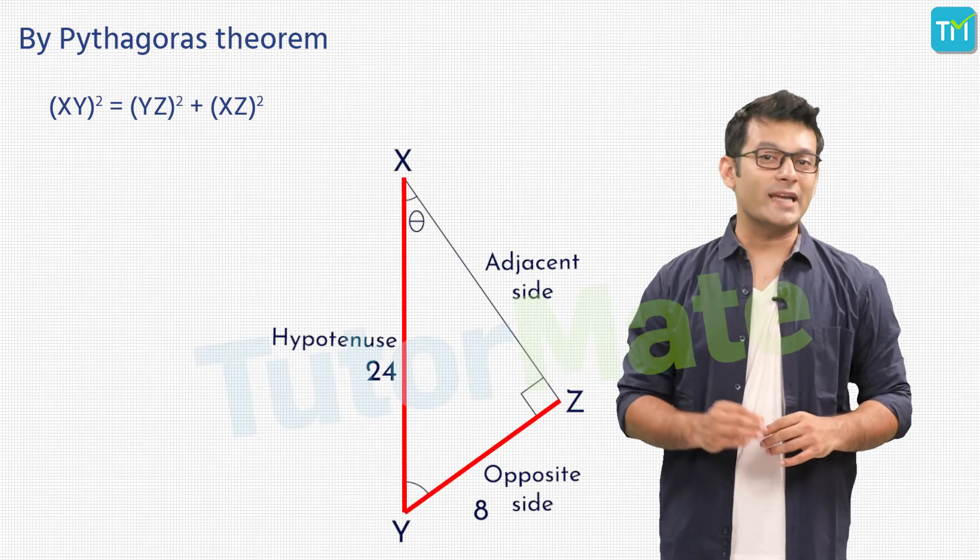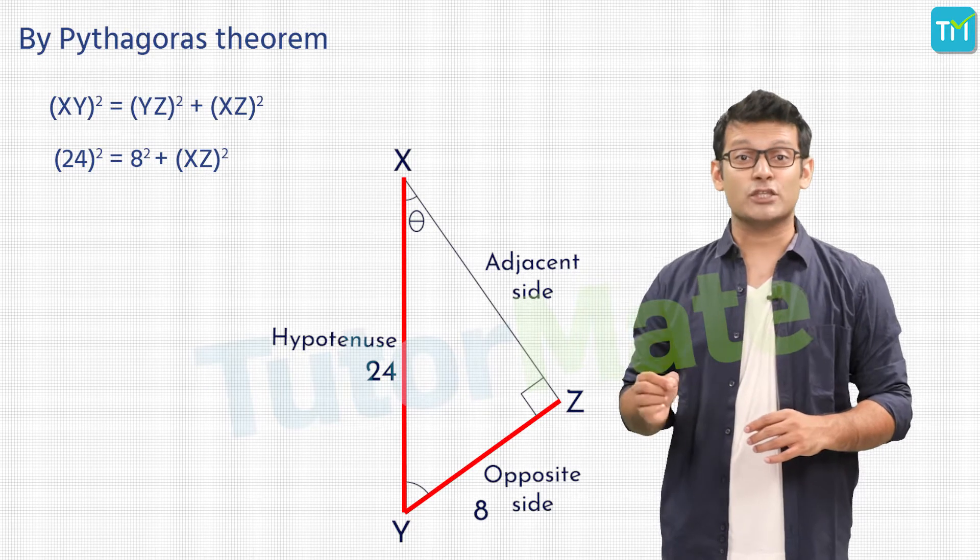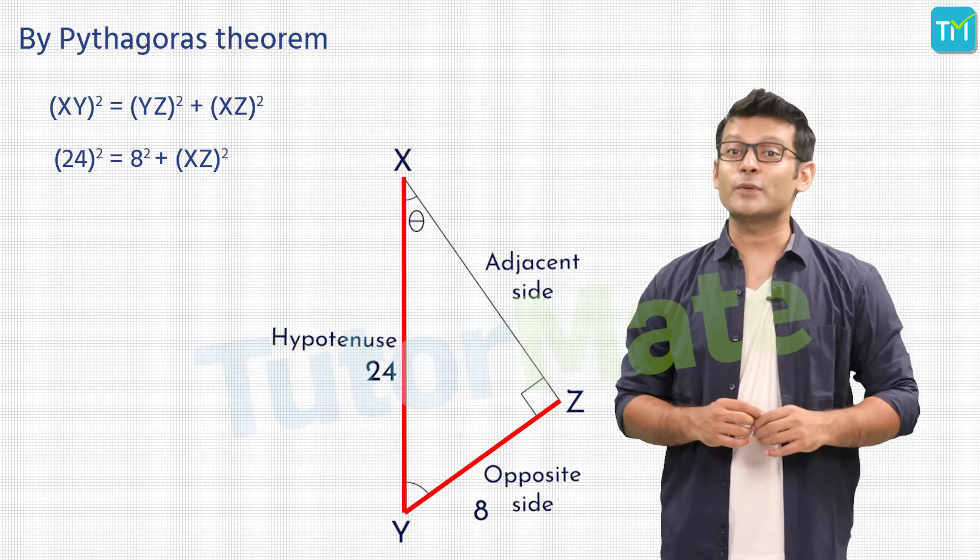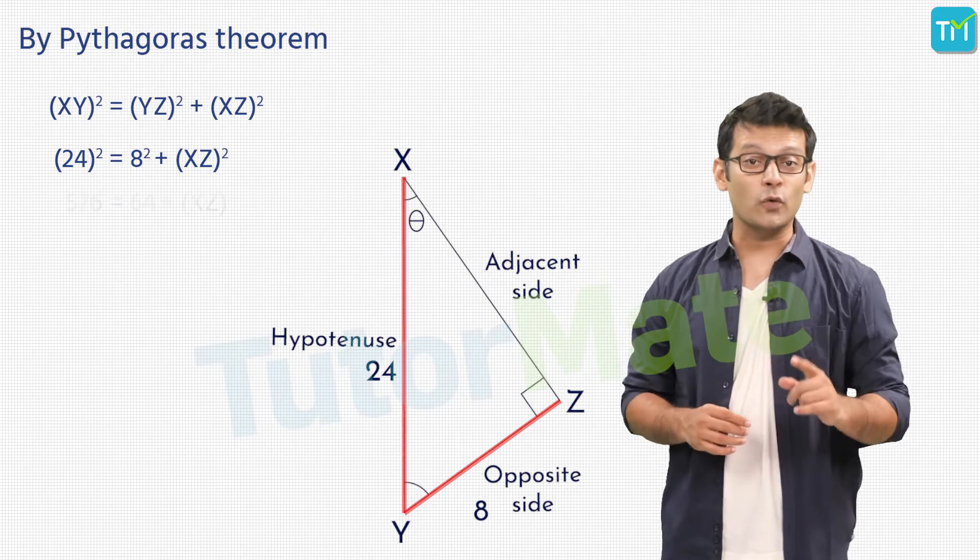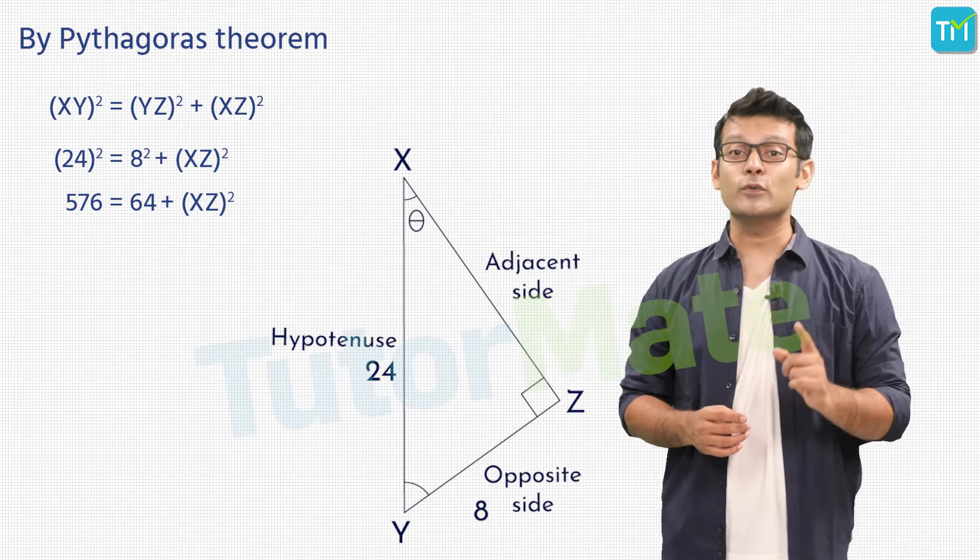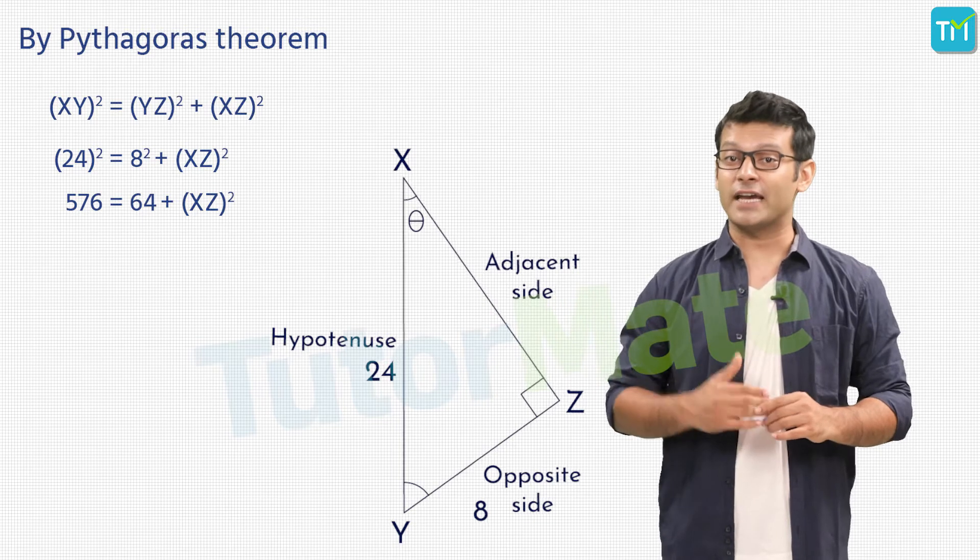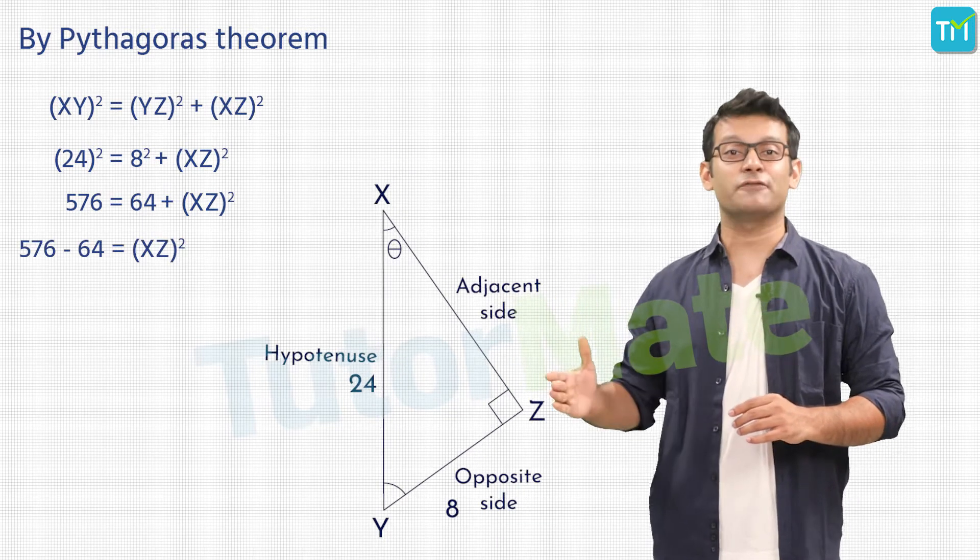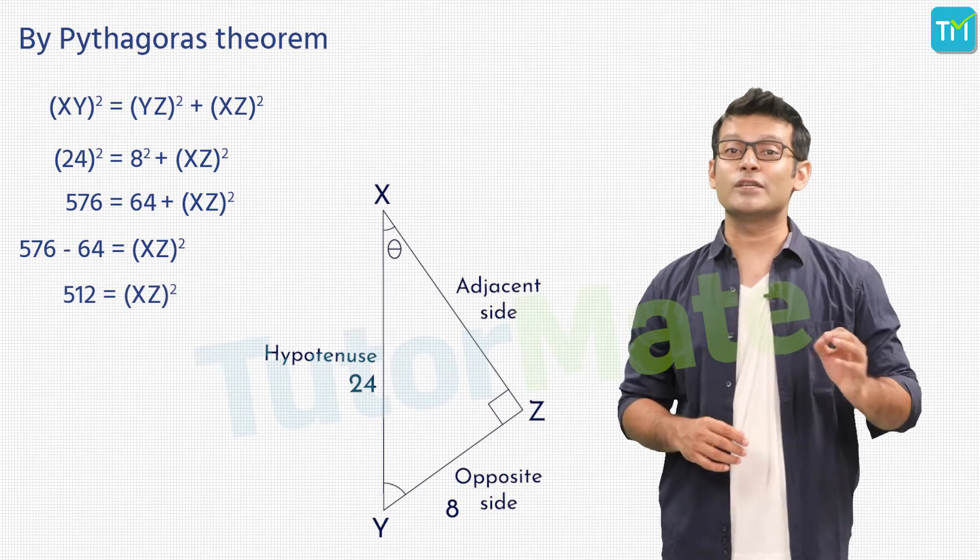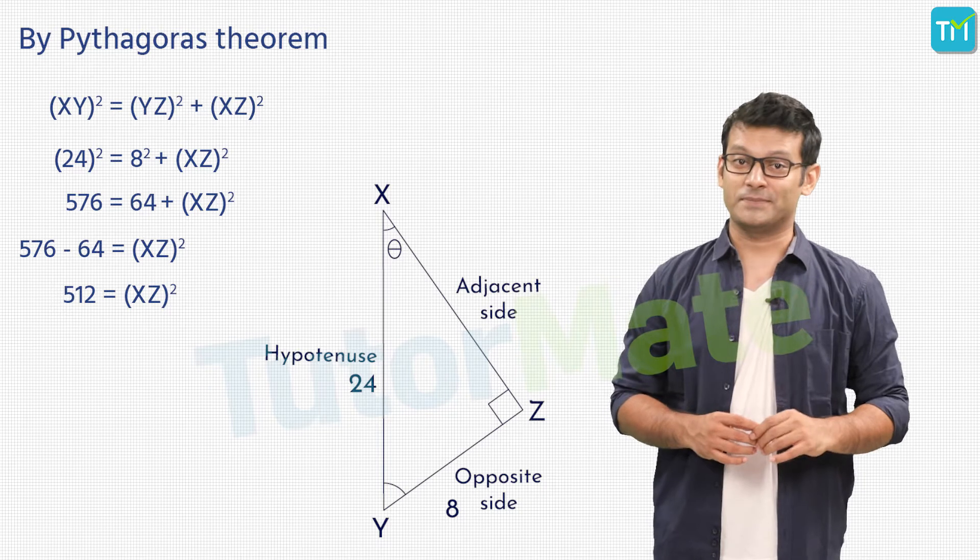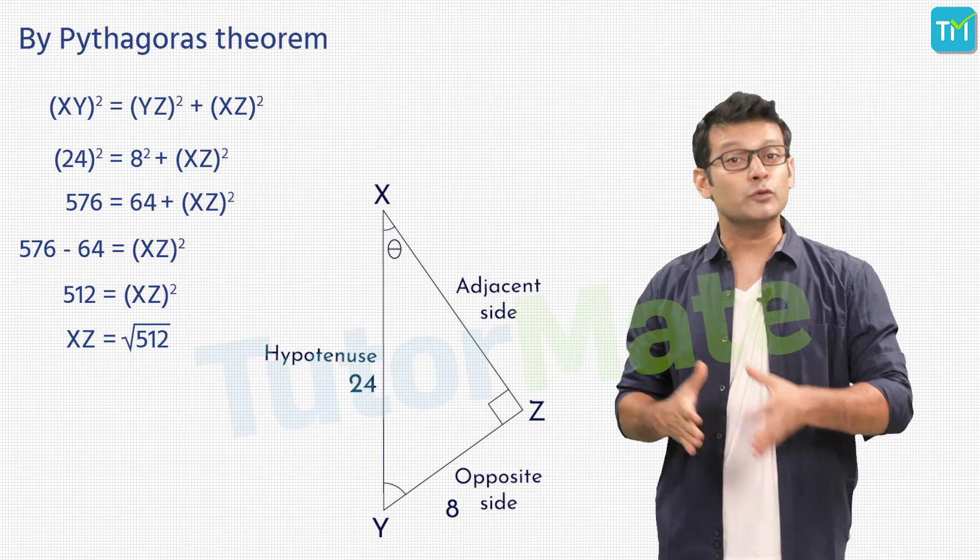Substituting the values of XY and YZ, we will get 24² = 8² + XZ². We know that 24² is 576 and 8² is 64. So, 576 = 64 + XZ². Taking 64 on the other side, we will have 576 - 64 = XZ². This will give us 512 = XZ².